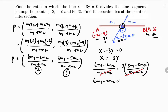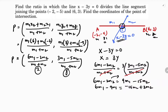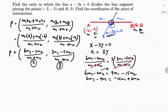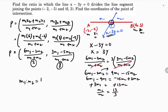After cancellation: 6m1 - 2m2 = 3(3m1) - 3(5m2), which gives 6m1 - 2m2 = 9m1 - 15m2. Bringing like terms to one side: 6m1 - 9m1 = -15m2 + 2m2, so -3m1 = -13m2. Therefore m1/m2 = 13/3, and the ratio m1 to m2 is 13 to 3.